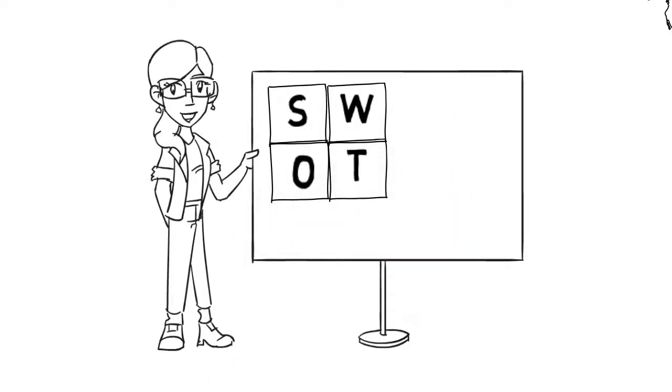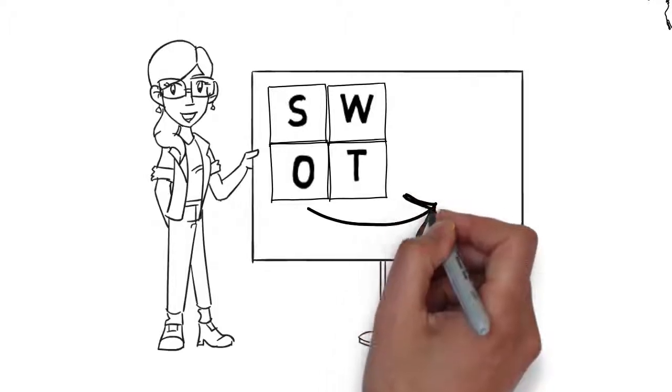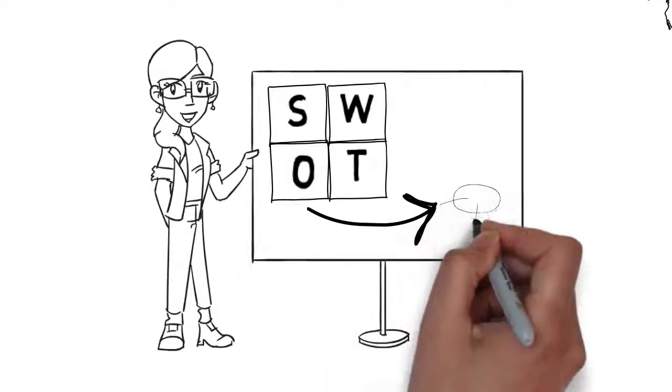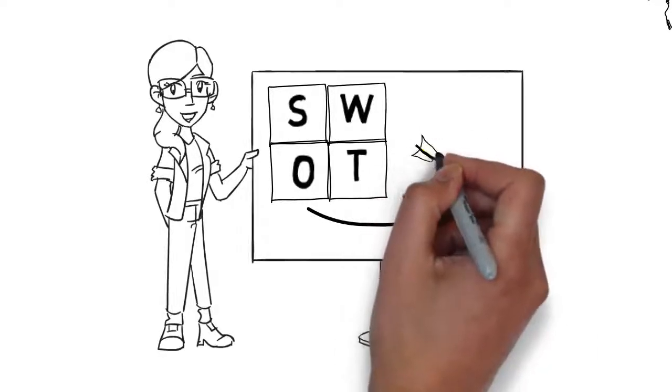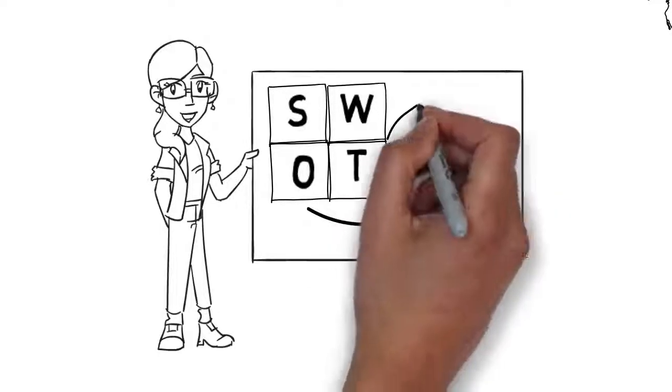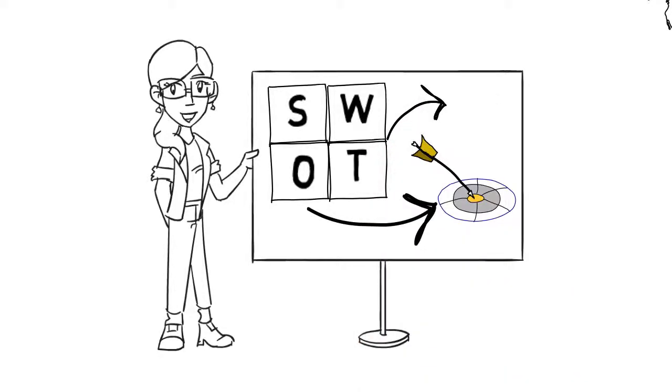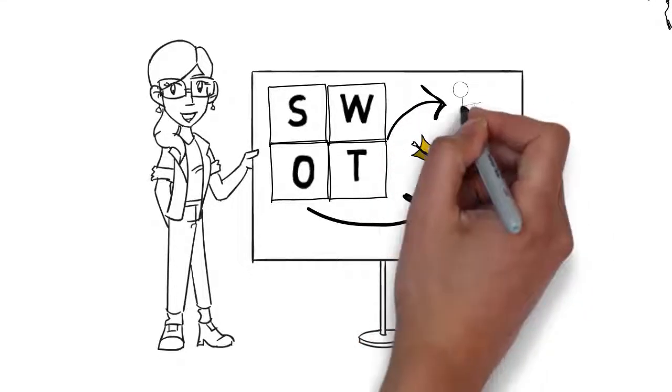Together, your strengths and opportunities help identify your long-term goals you can achieve. While your weaknesses and threats facing you need to be mitigated, planned for or managed to ensure that your goal remains attainable and realistic. To begin your personal SWOT analysis,